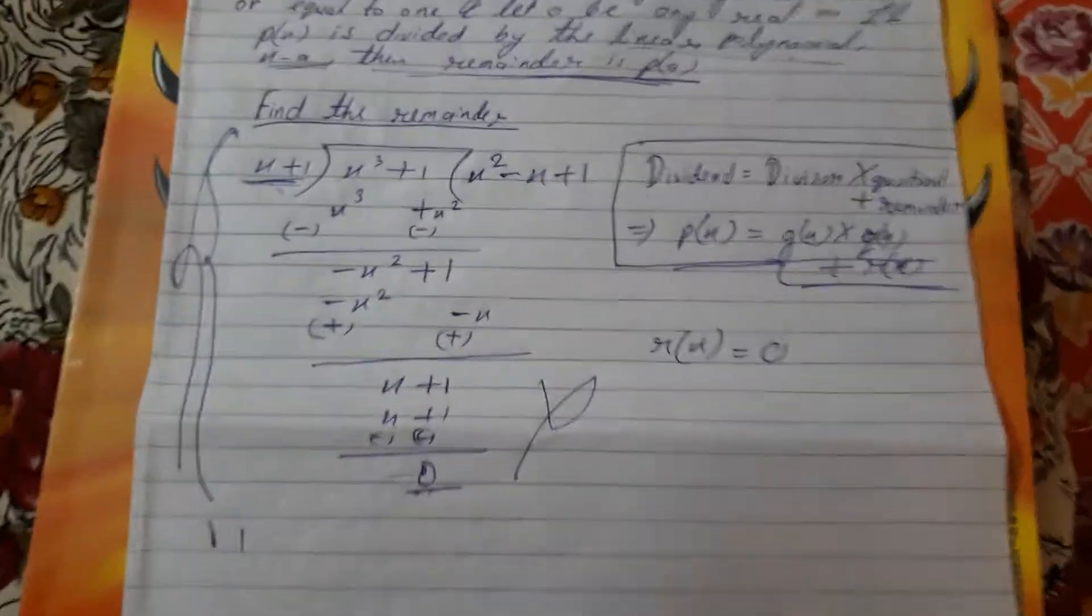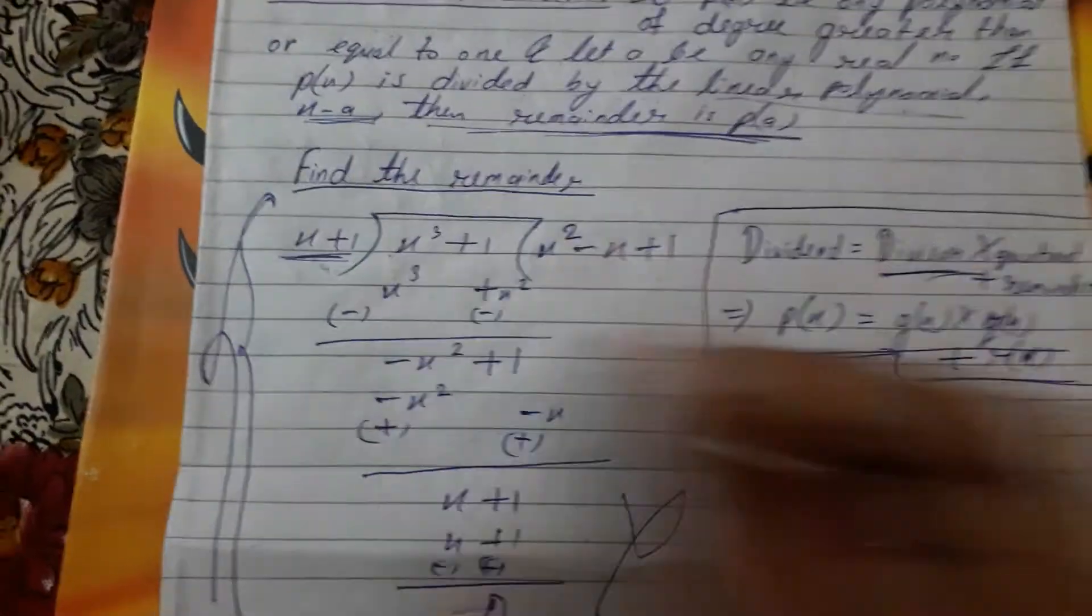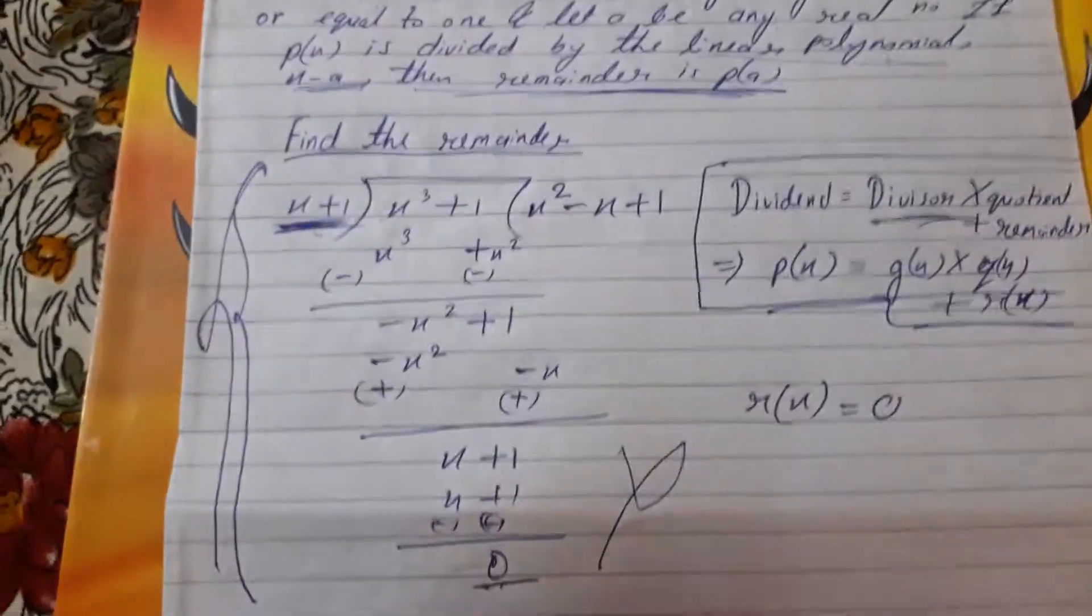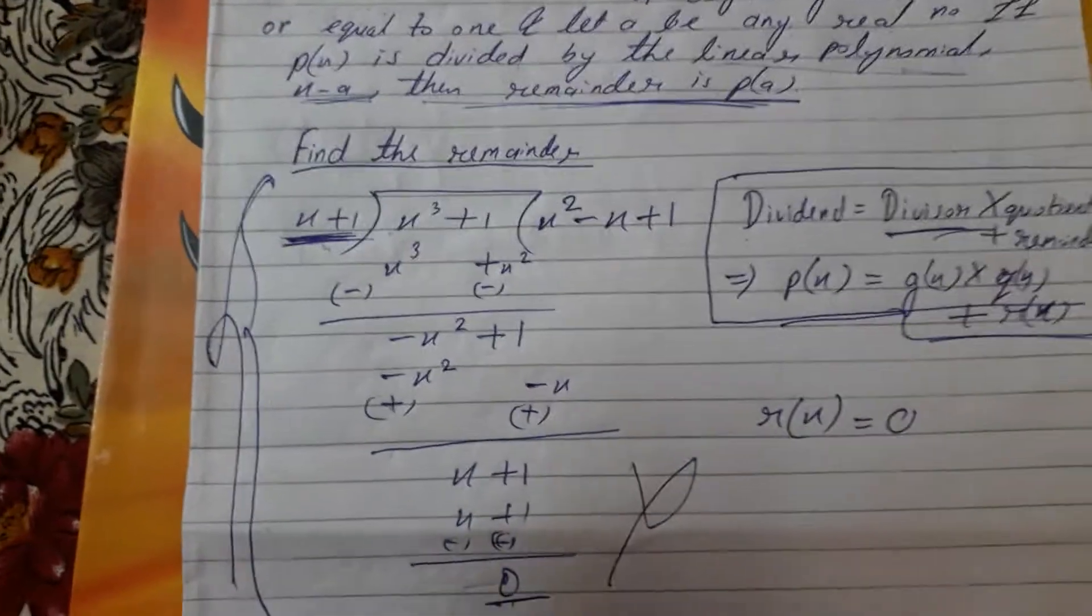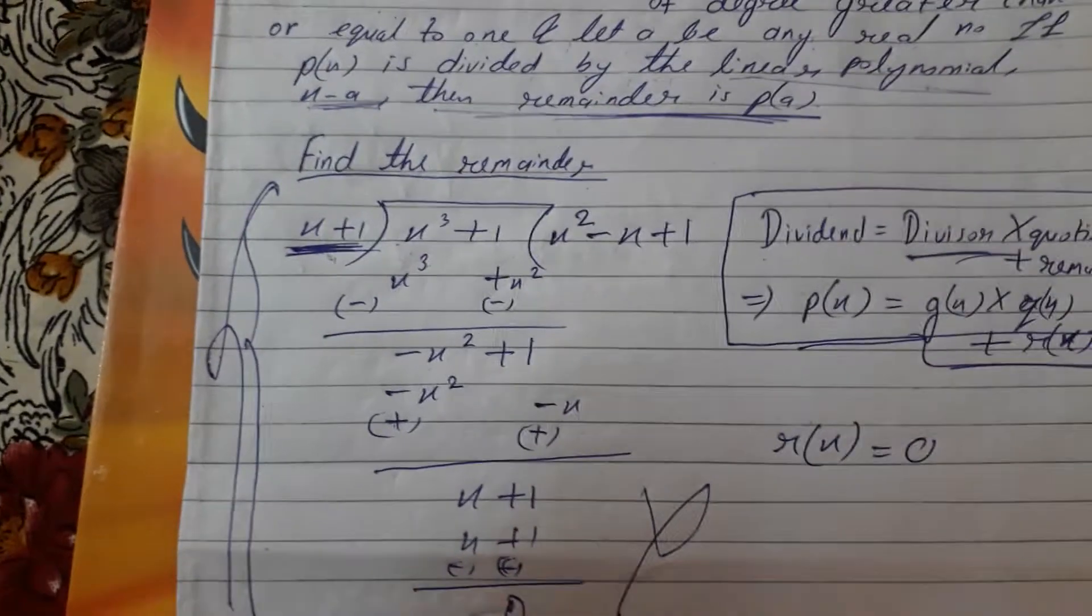You can find it easily in one second. Now see how you can find it. First, you have to see the divisor. Here the divisor is given as x plus 1. From here you can say that x is equals to minus 1.